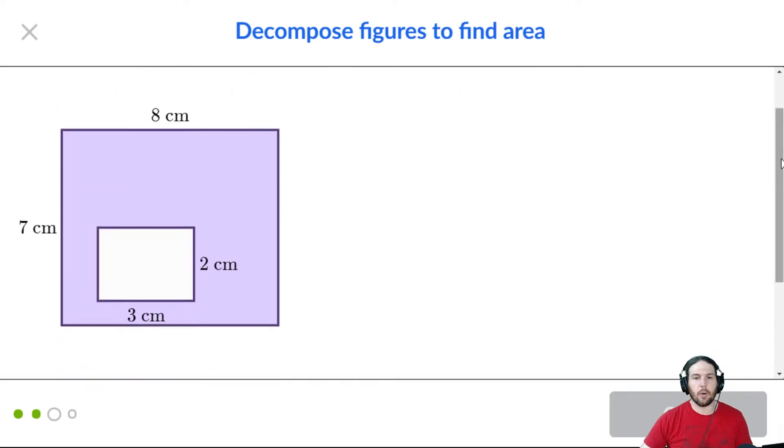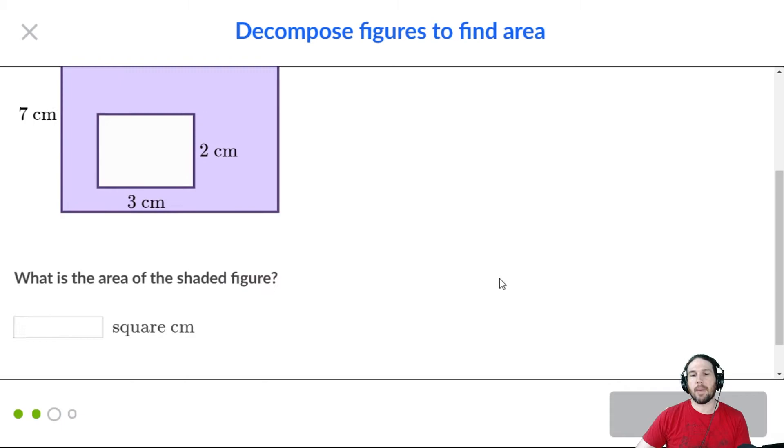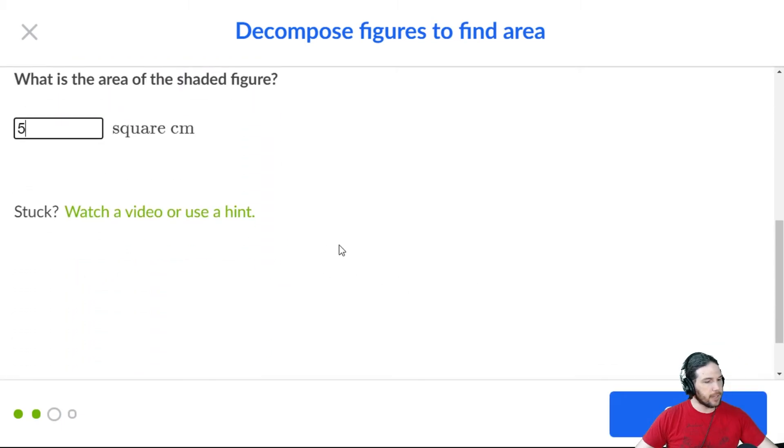Now we have a large rectangle and a small rectangle cut out of it. The large rectangle is eight by seven, which is 56. The small rectangle is two by three, which is six. 56 minus six is 50 square centimeters.